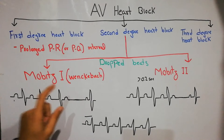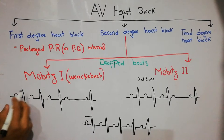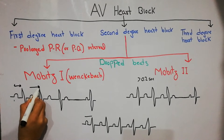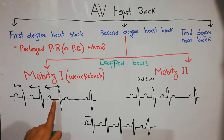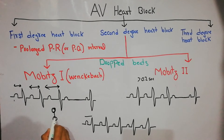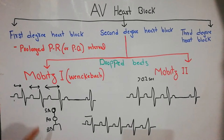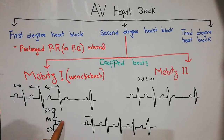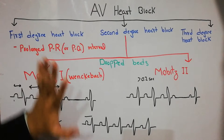On the ECG, you can see the PR interval starts small, then becomes a bit larger, then larger still, and finally a P wave occurs but there is no following QRS complex. This is because the rhythm starts in the SA node, travels to the AV node, and then to the bundle branches. In AV heart blocks, there are pathologies in the AV node or the Bundle of His. If the impulse is only delayed, it will cause a first degree heart block.